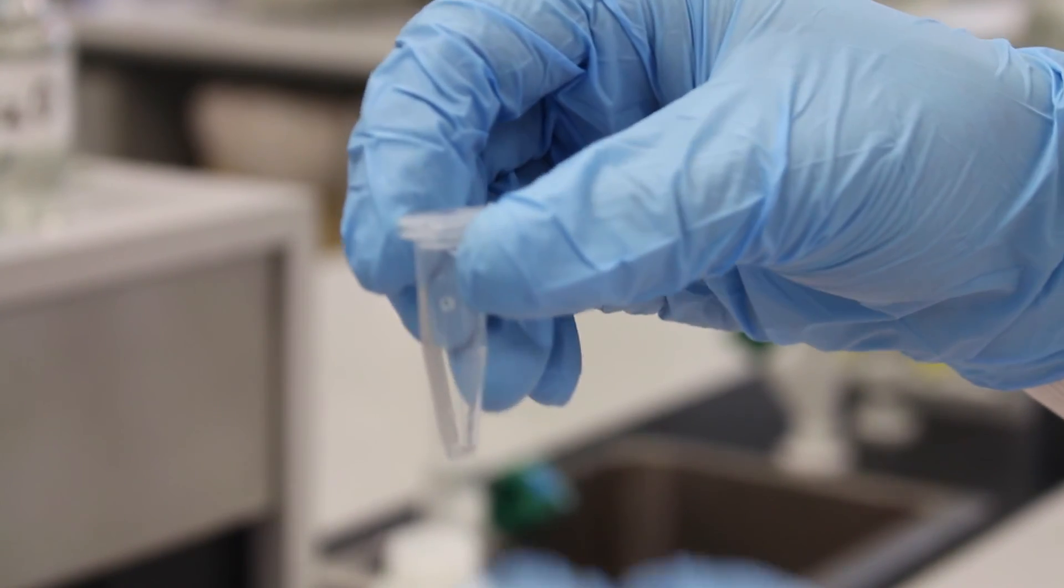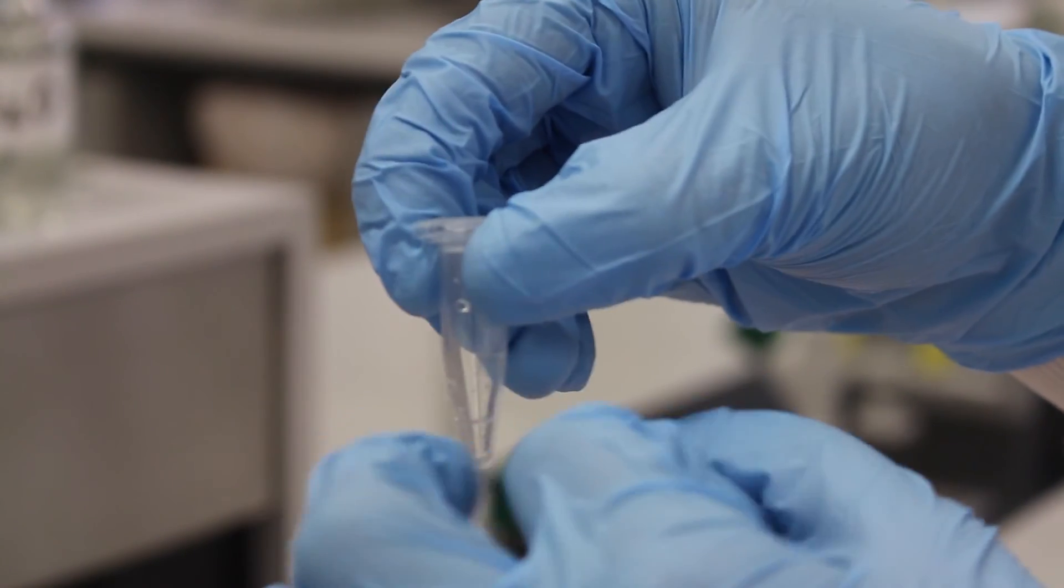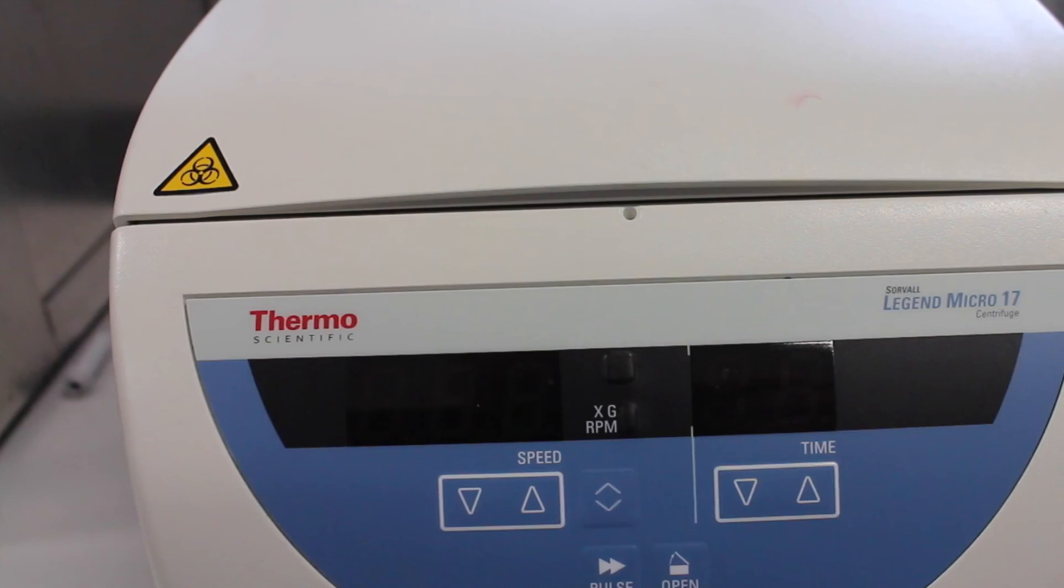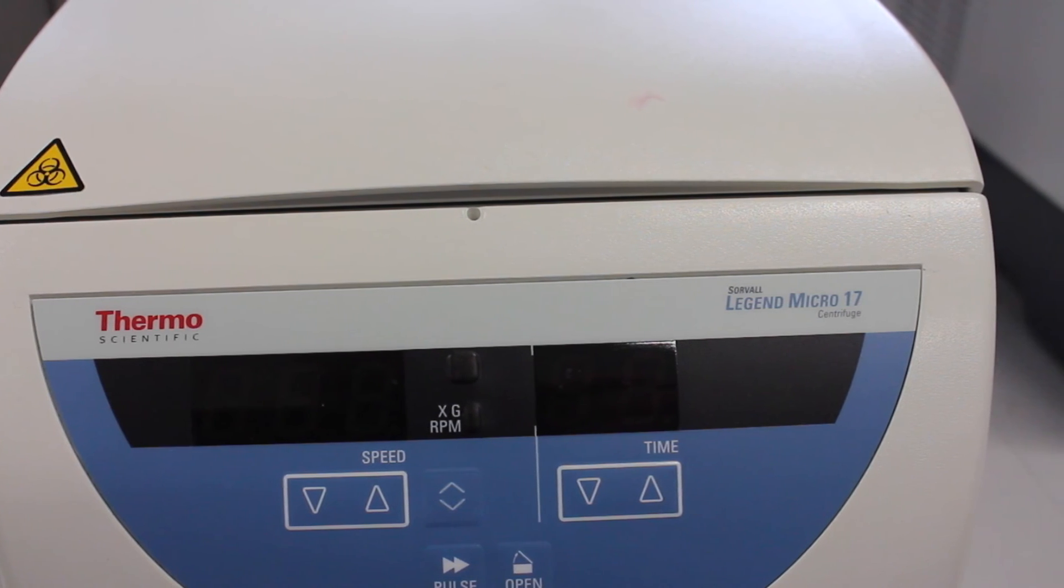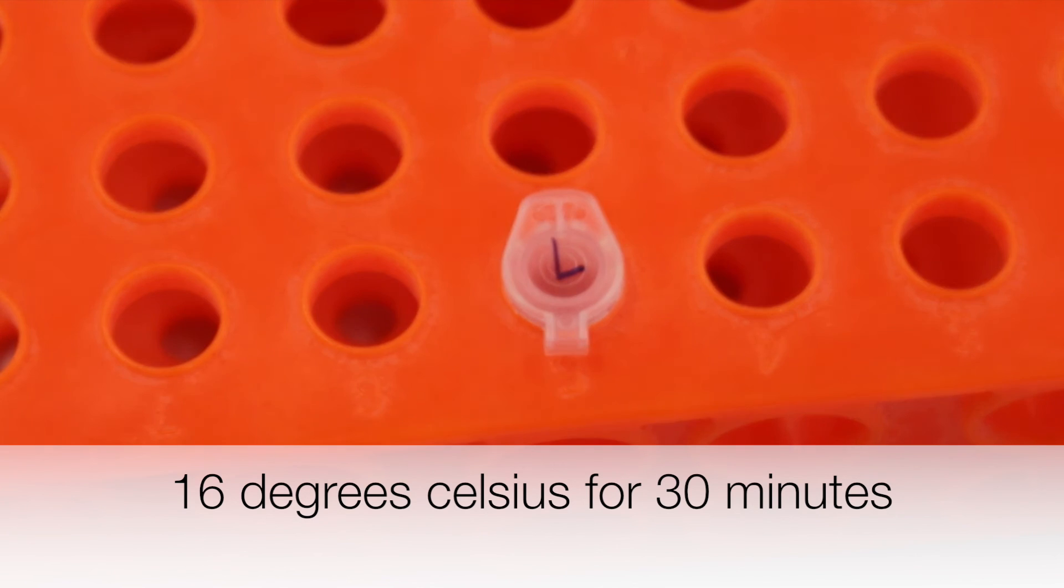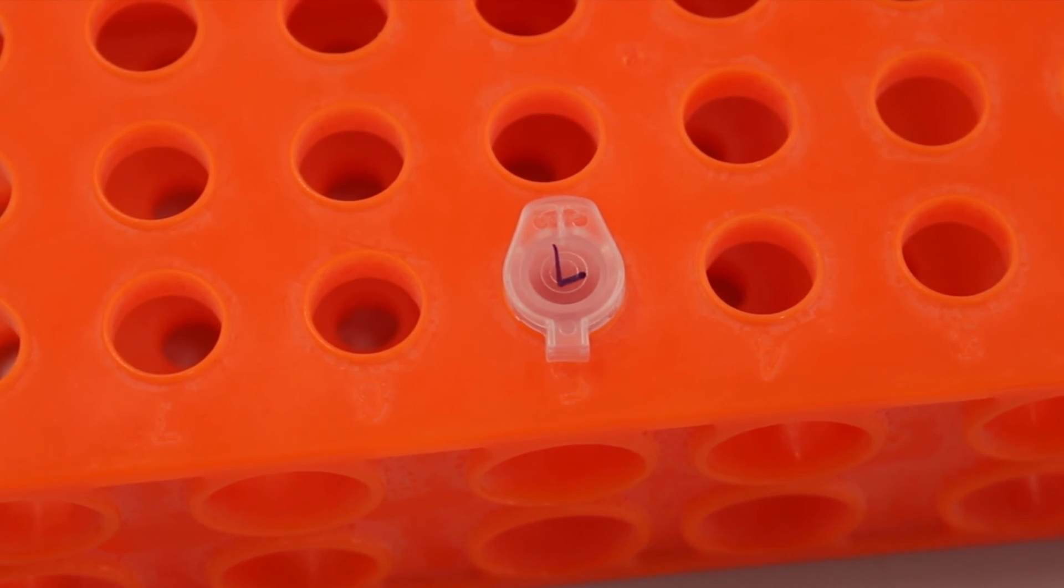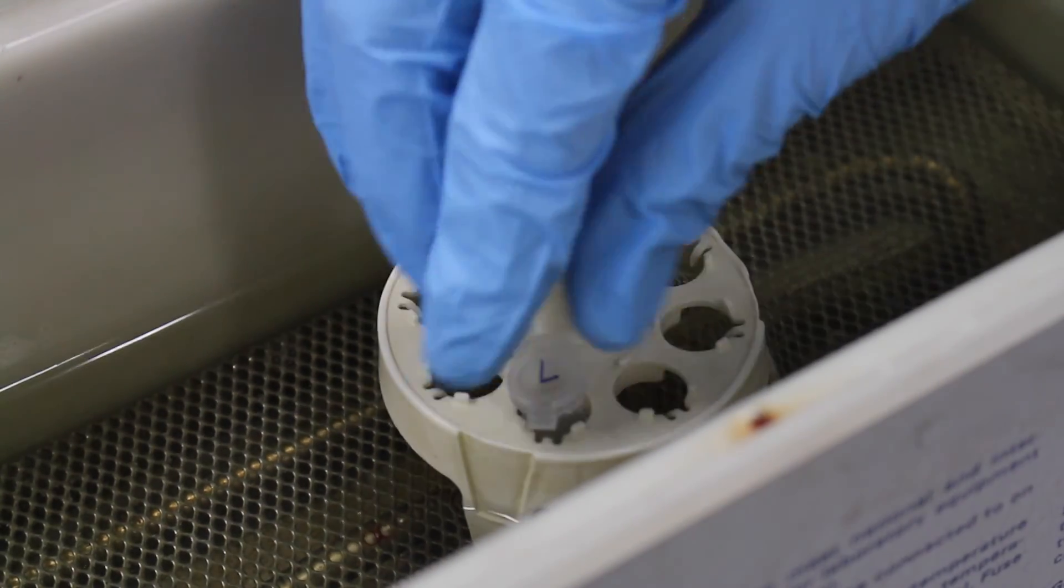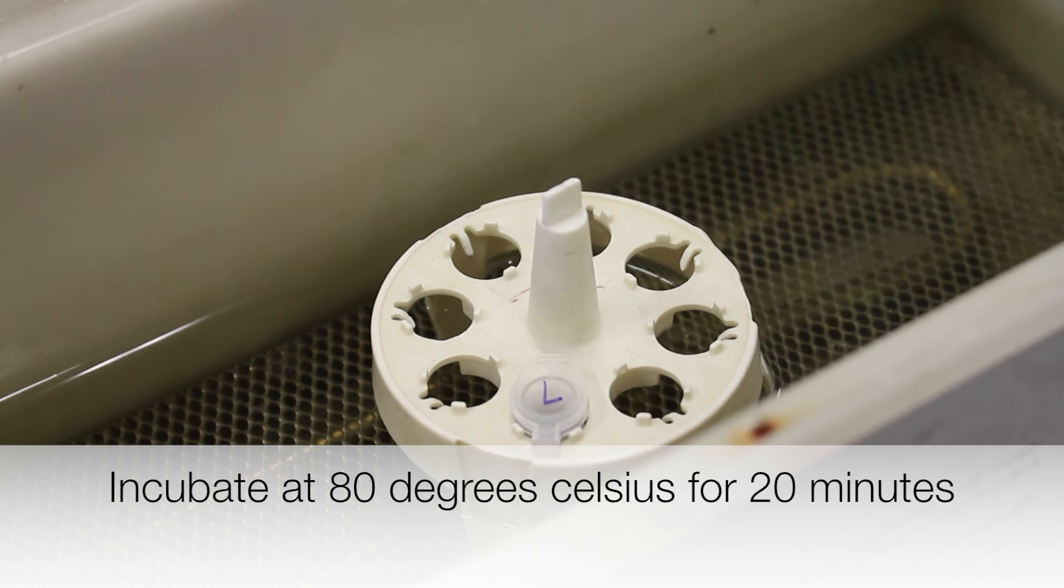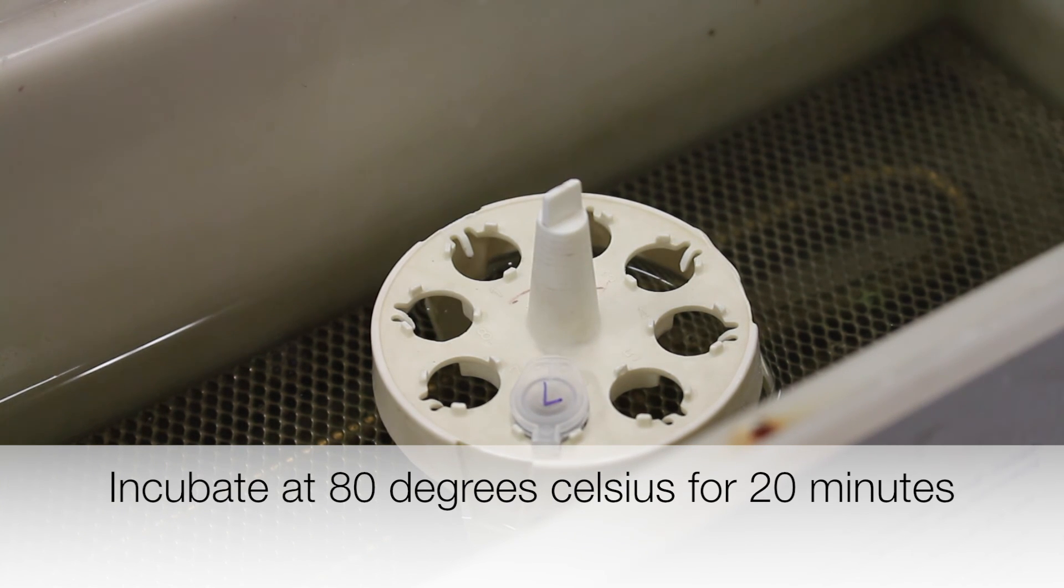The tube is flicked to mix all the contents together. The tube can be spun on a microcentrifuge for a few seconds to collect the liquid in the bottom of the tube. Tube L is left at 16 degrees Celsius for 30 minutes to allow the ligation reaction to proceed. The tube is then placed in a water bath at 80 degrees Celsius for 20 minutes to denature the enzyme.